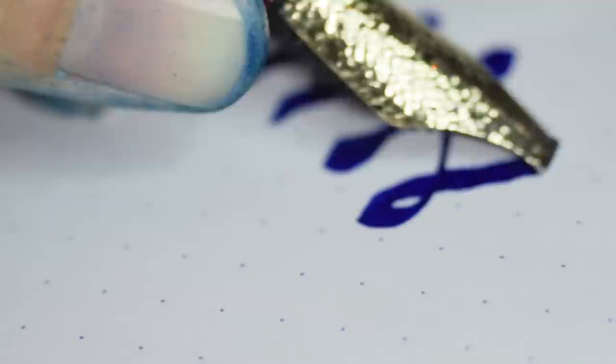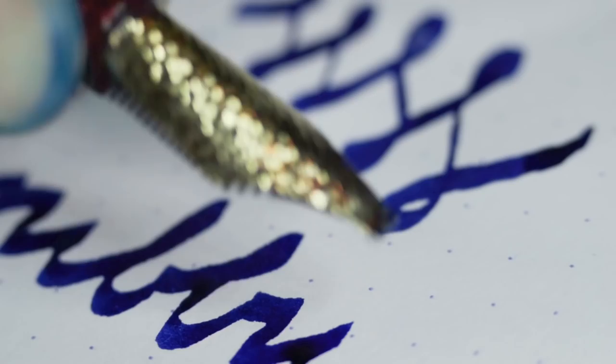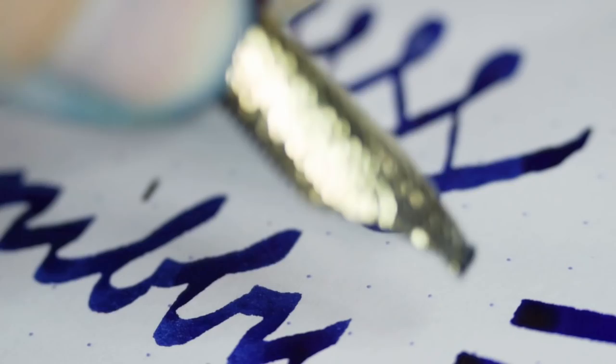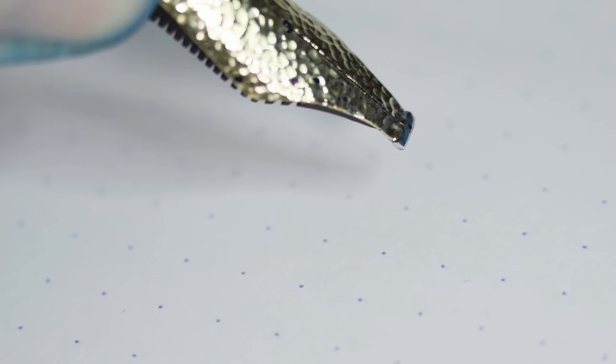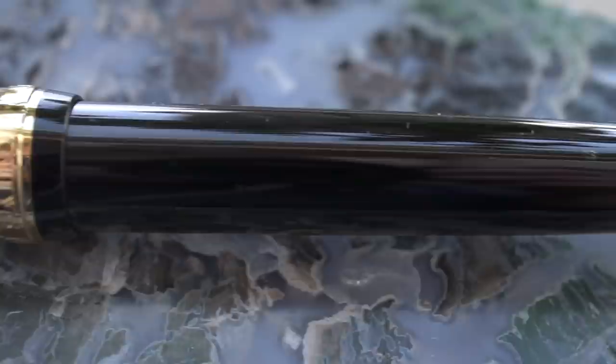But the killer nib, the absolute heart stopper, is this one. It's a hammered 14 karat gold number 8 nib with a 3.5 millimeter stub. Last year Annabelle's pen, The Symphony, made it into my top pens of 2020. And here she is again with just this beautiful, beautiful nib. Of course it's in the top nibs of 2021.